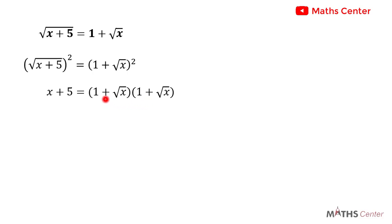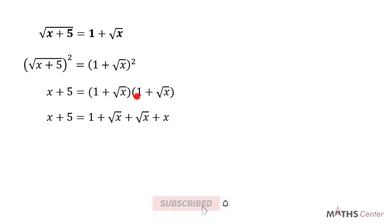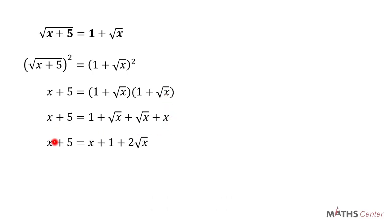Let's expand the brackets. On the left hand side we have x plus 5. On the right hand side: 1 times 1 is 1; 1 times square root of x is root x; square root of x times 1 is root x; and square root of x times square root of x gives us x. So this gives us x plus 5 equals x plus 1 plus 2 root x.